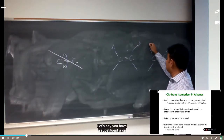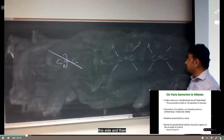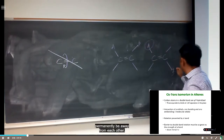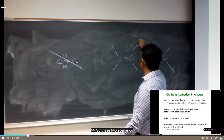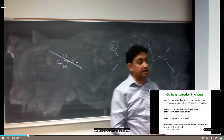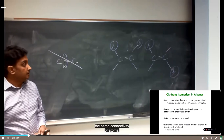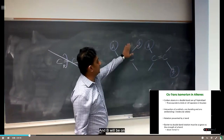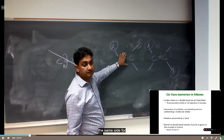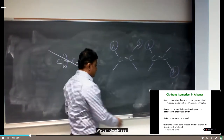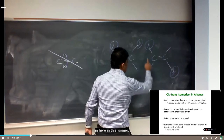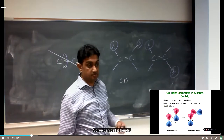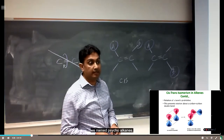If substituent A is on one side and substituent B is on the other side, they will permanently be away from each other. These two scenarios are completely different even though they have the same atomic connectivity. When the two substituents are on the same side, we call it cis; when they are on opposite sides, we call it trans — just like we named cycloalkanes.